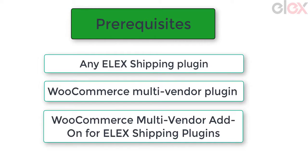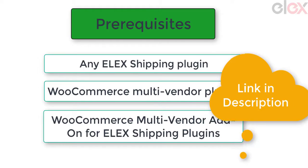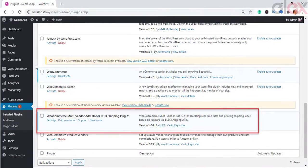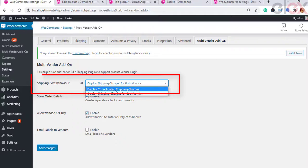To learn more about installation and activation of LX plugins, check out the link in the description below. Go to WooCommerce and then choose Multi-Vendor Add-On and enable it. Here you find the settings as shown — starting with Shipping Cost Behavior.